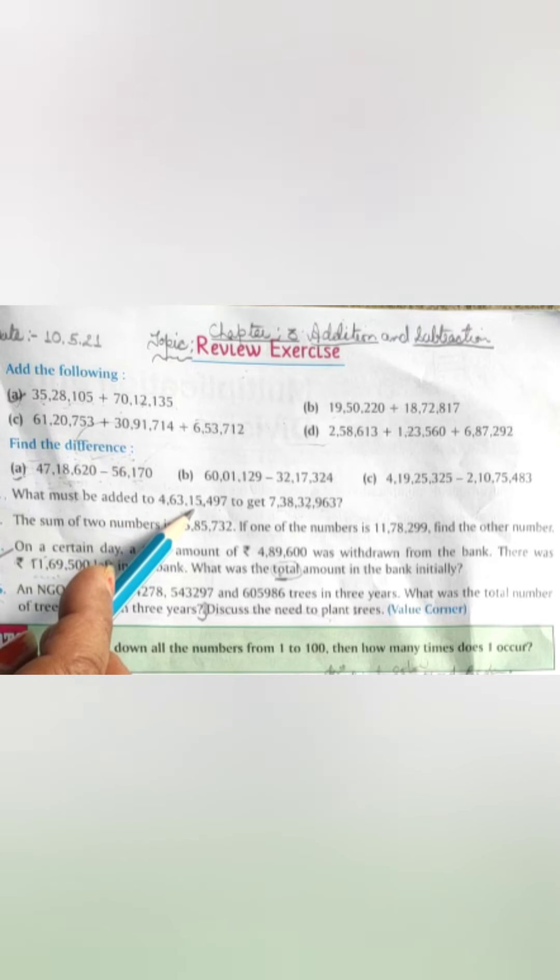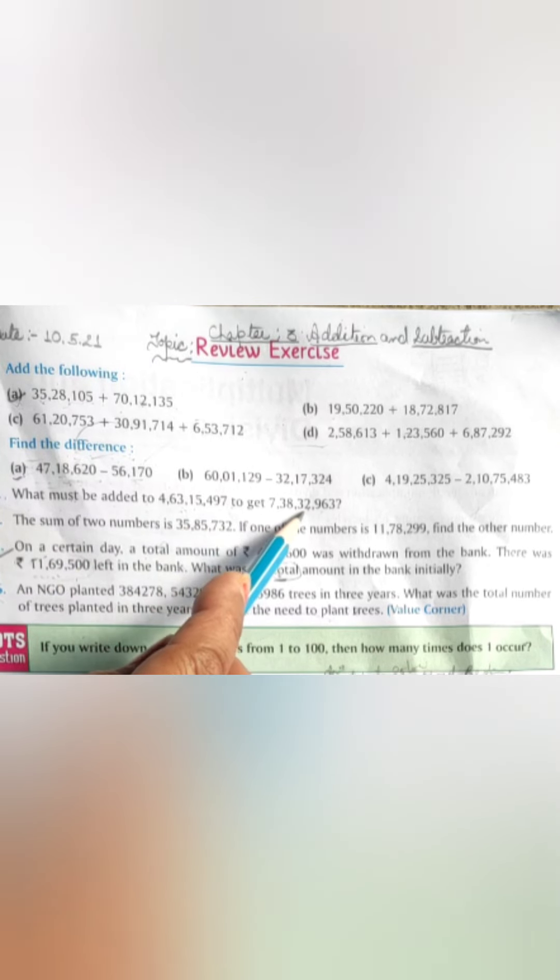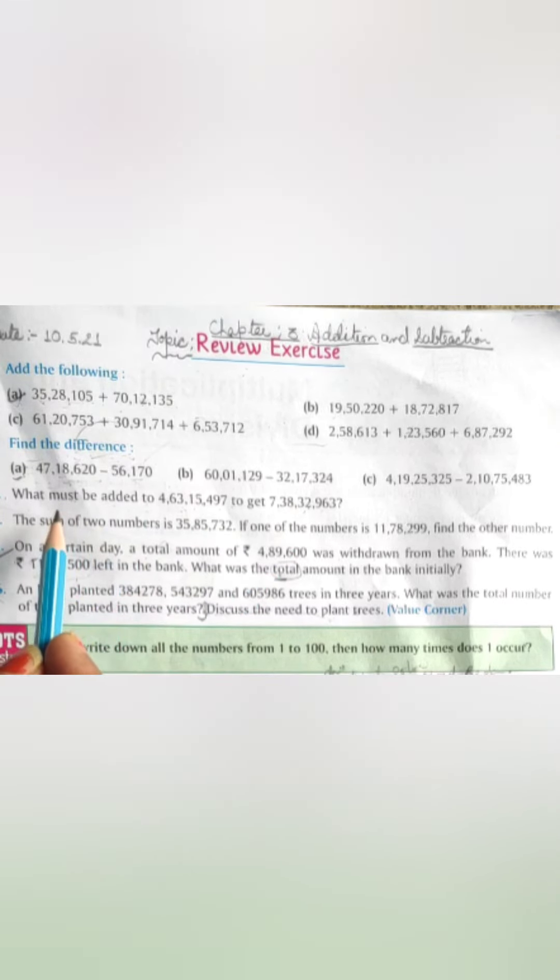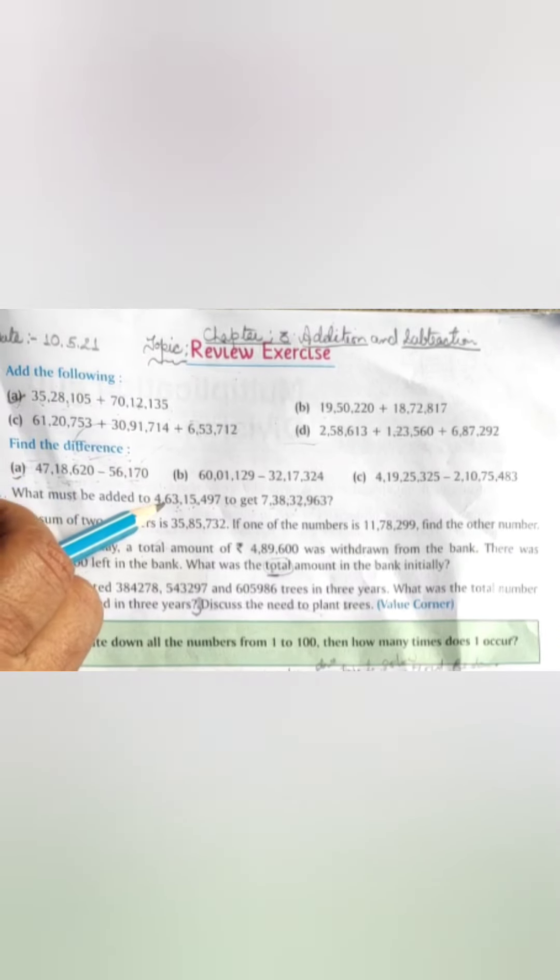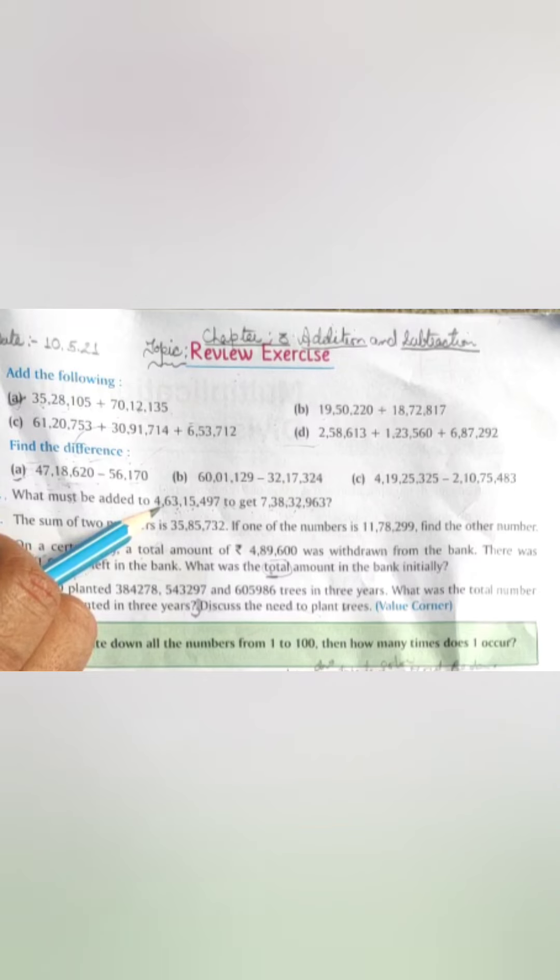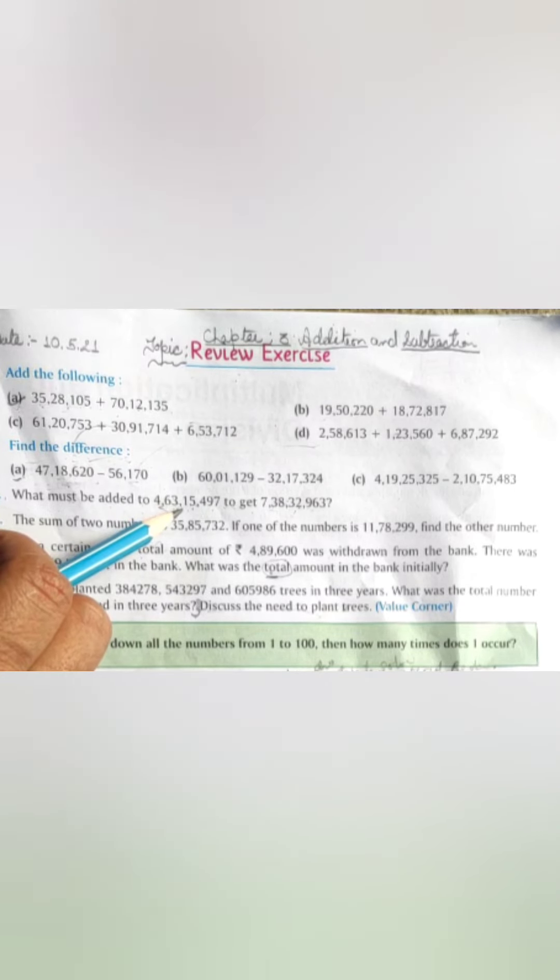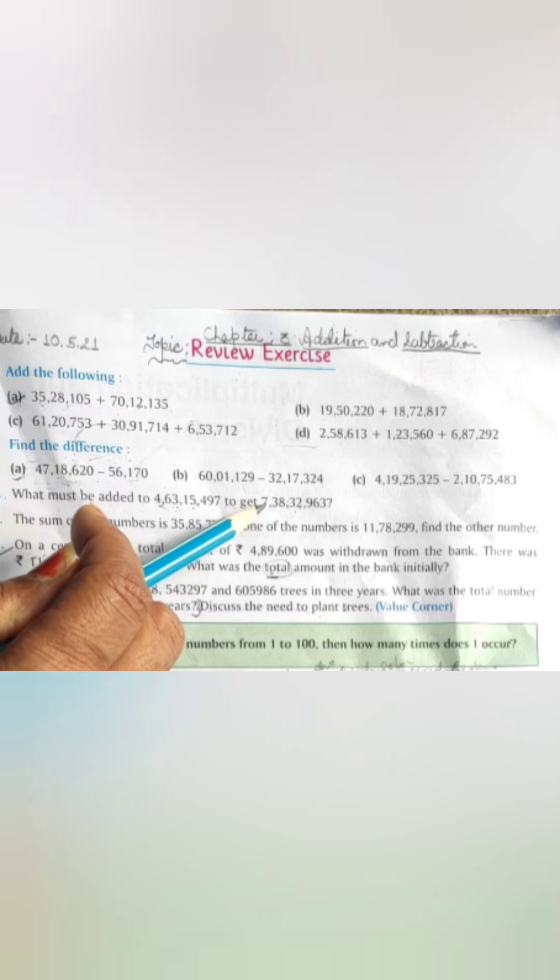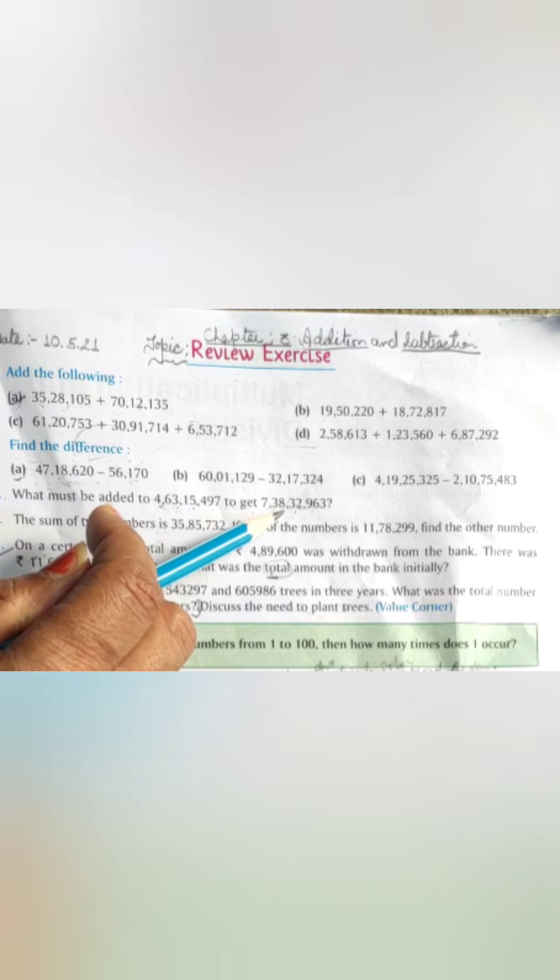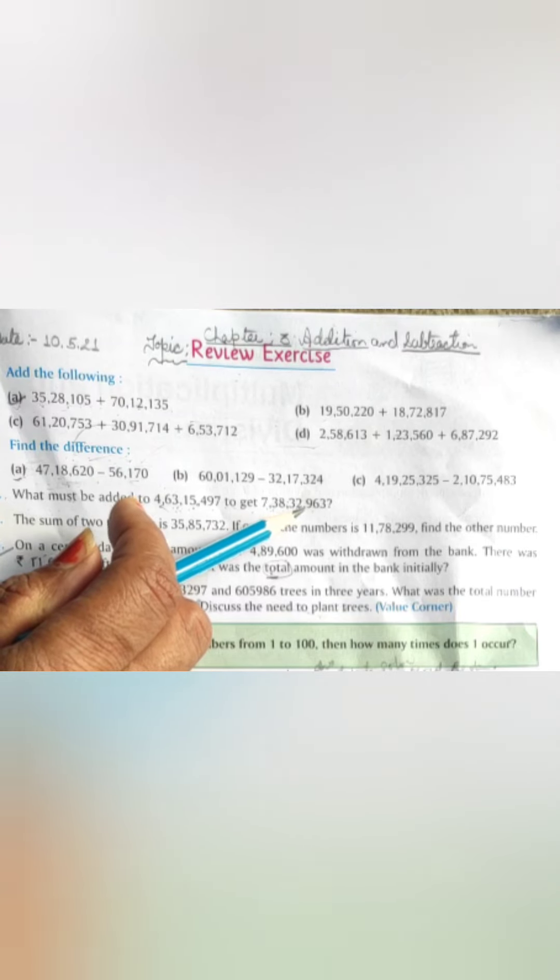Now question number 3. What must be added to this to get this? In this question, we subtract 4,63,15,497 from 7,38,32,963.